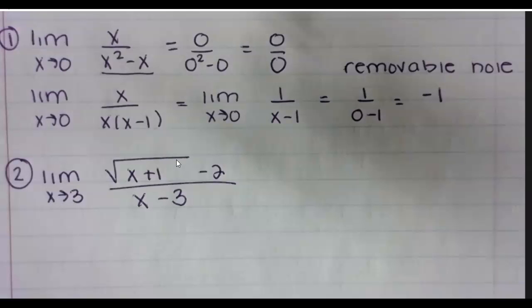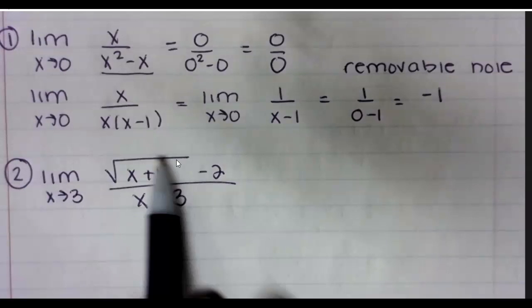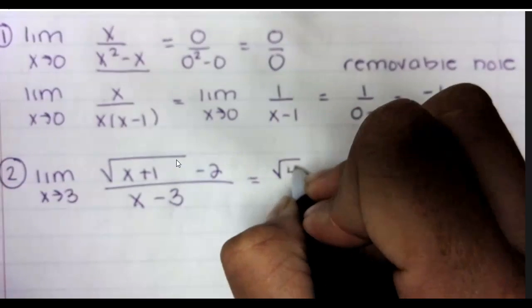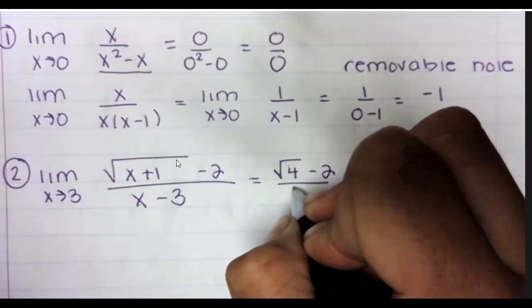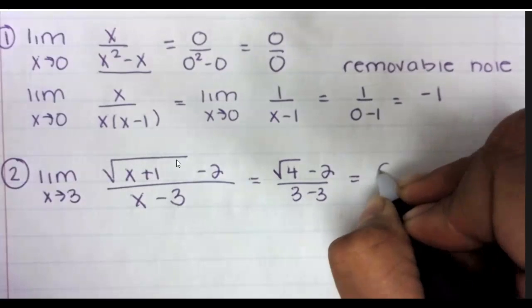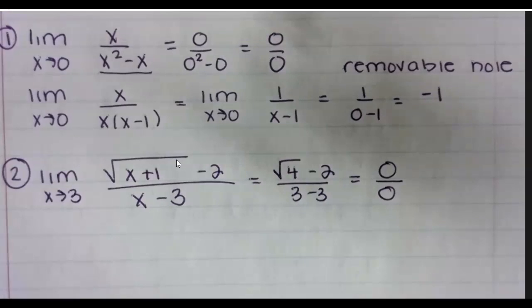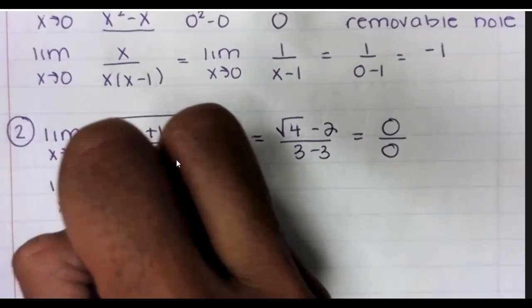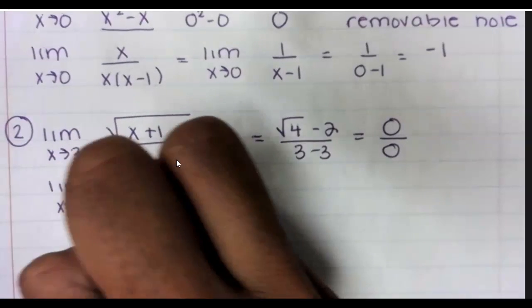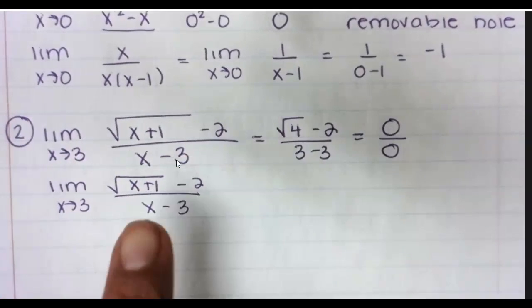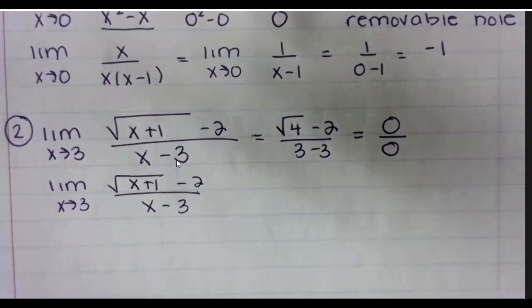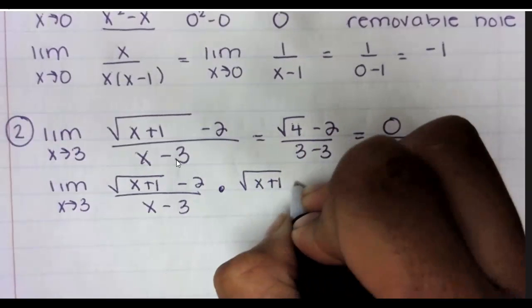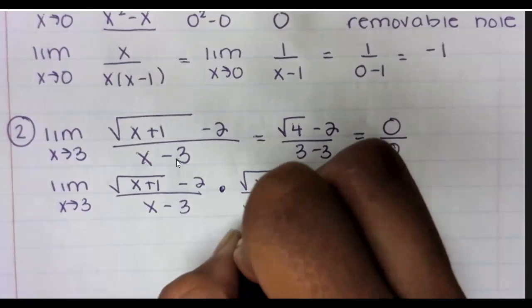All right, flipping to station two. Do you want to do one or two? All right, so again when we see this one we're automatically, I know you're ahead, going at complex conjugate and it is true because if you plug in three you get the square root of four minus two over three minus three which gives two minus two which is zero and three minus three which is zero. So we know that this needs to be done using the complex conjugate.